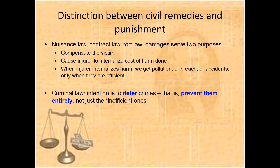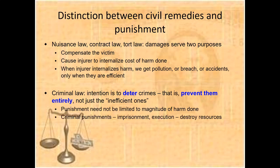Deterrence means prevent crimes entirely — not just inefficient ones. In tort, contract, and property cases there is a benchmark: if it is inefficient, don't do it. But in criminal law there is no such benchmark — conceptually you are trying to make crime zero. If it still happens, punish with severity. This is the trade-off dealt with under criminal law. Punishment need not be limited to the magnitude of harm done — imprisonment, execution, destroying the offender's assets are all part of criminal punishment.